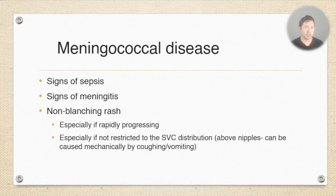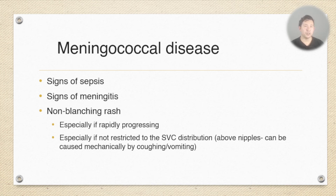It's particularly worrying if the rash is not restricted to the SVC distribution. When you get a few petechiae all above the level of the nipples, this can just be a sign of mechanical petechiae formation — raised pressure when the child coughs or vomits causes these tiny blood vessels to burst, resulting in small hemorrhages in the skin. Those are much less concerning if you only have two or three petechiae above the level of the nipples.